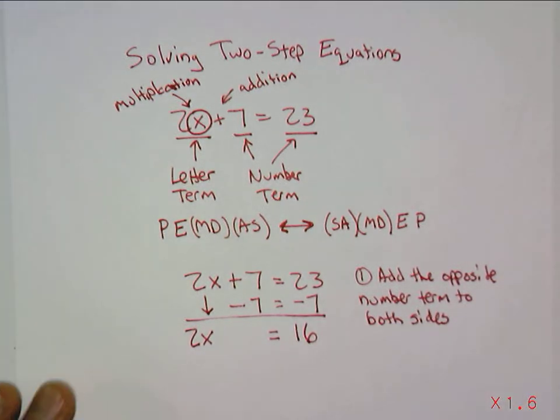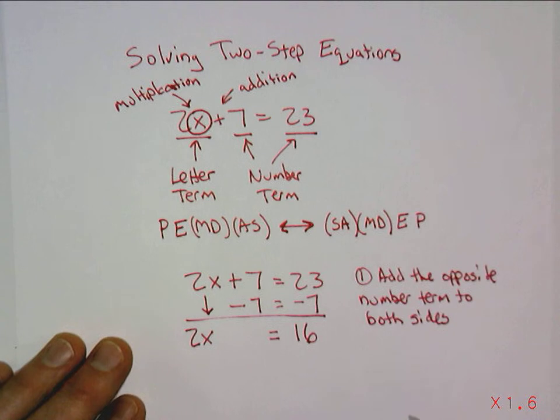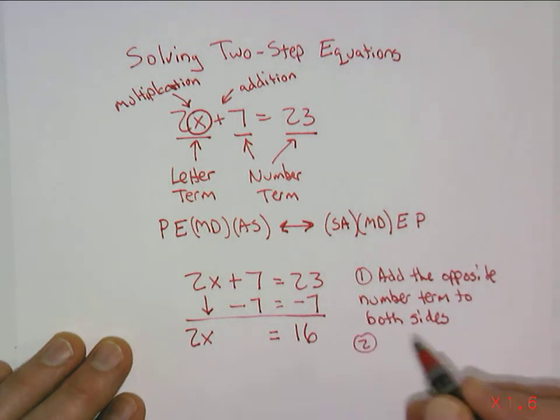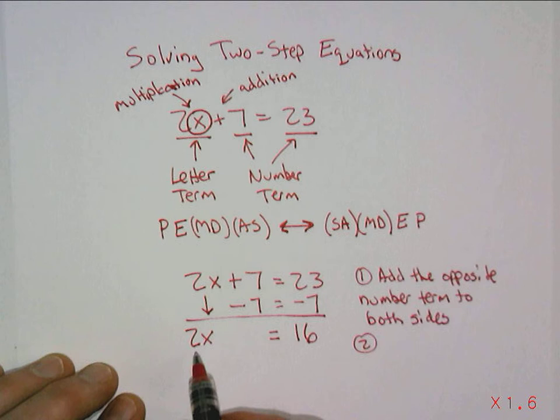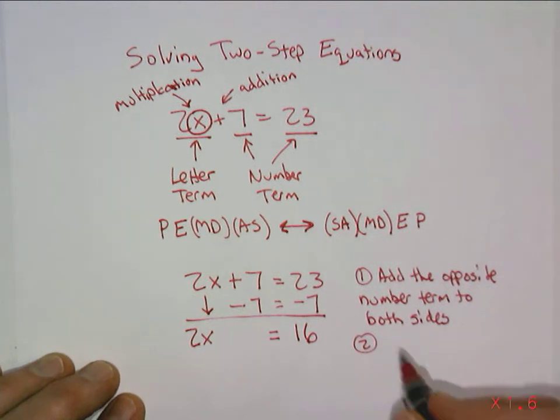And so now we've simplified this problem a little bit. We've done one step. And now we need to do one more step, a second step. And if you see here in this case, we have multiplication. And so the way to undo multiplication is with division.